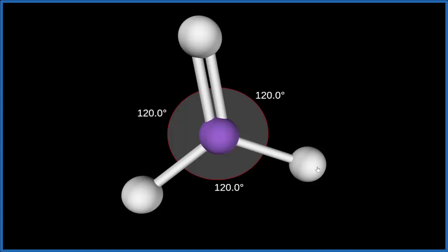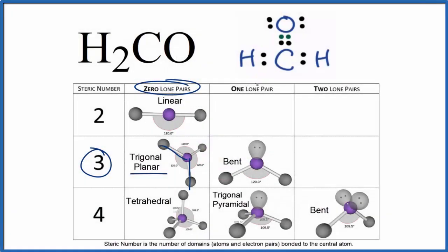Let's go back to our Lewis structure. So we could also use what's called the AXE notation to figure out the molecular geometry or shape here for H2CO. A, that's the central atom, that's the carbon. X, that's the number of atoms attached to the carbon.